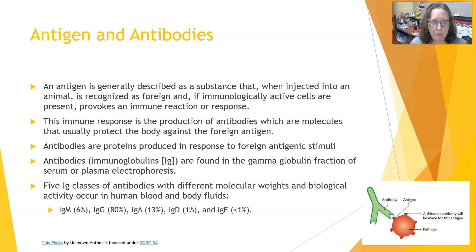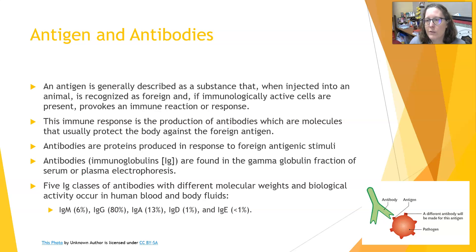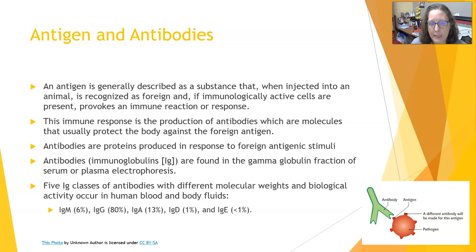An antigen is generally described as a substance that when introduced into an animal is recognized as foreign, and if the immunologically active cells are present — so the immune system is working, you have lymphocytes, macrophages, monocytes — then there will be an immune reaction or immune response to that particular antigen. This immune response is usually the production of antibodies, which are molecules that typically protect the body against those foreign antigens and pathogens.